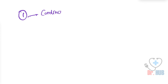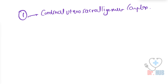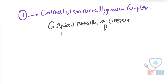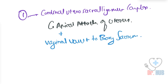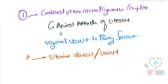To begin with, Level 1 — the structures forming the support include the cardinal uterosacral ligament complex. This provides the apical attachment of the uterus as well as the vaginal vault to the bony sacrum. The consequence of damage can lead to uterine descent, vault descent, and enterocele.